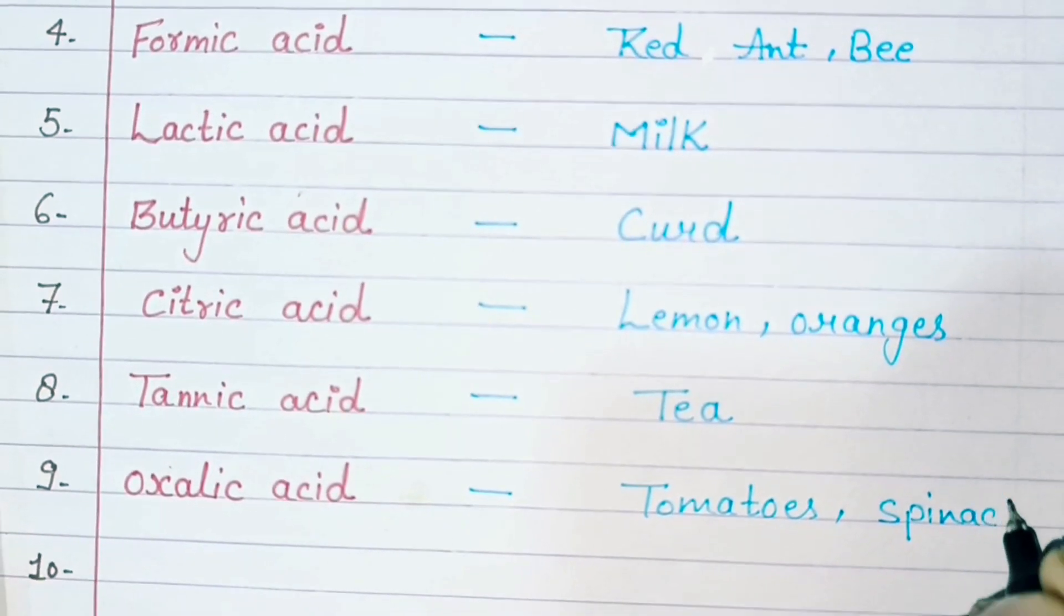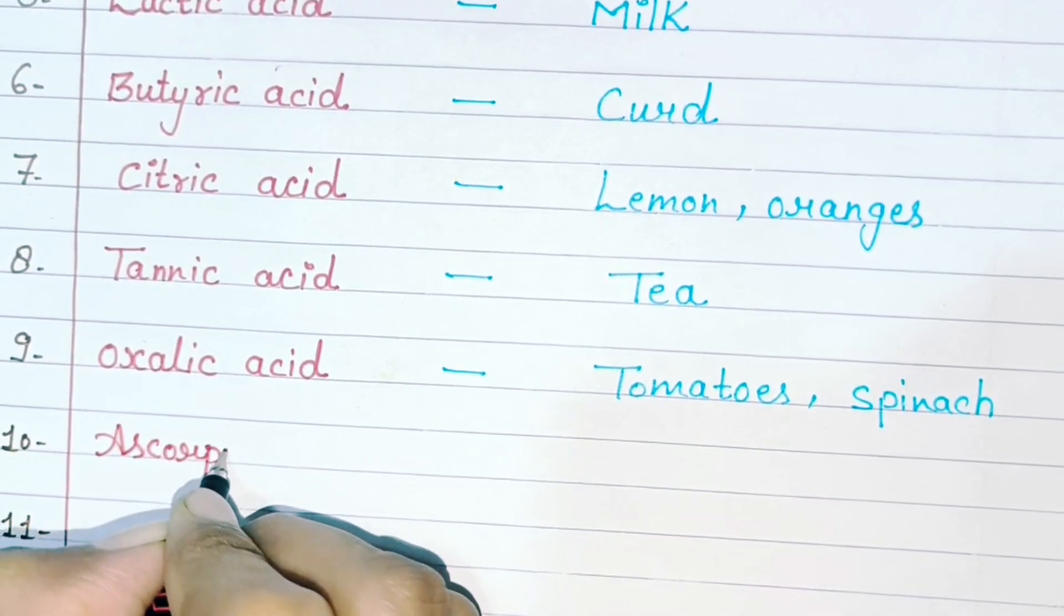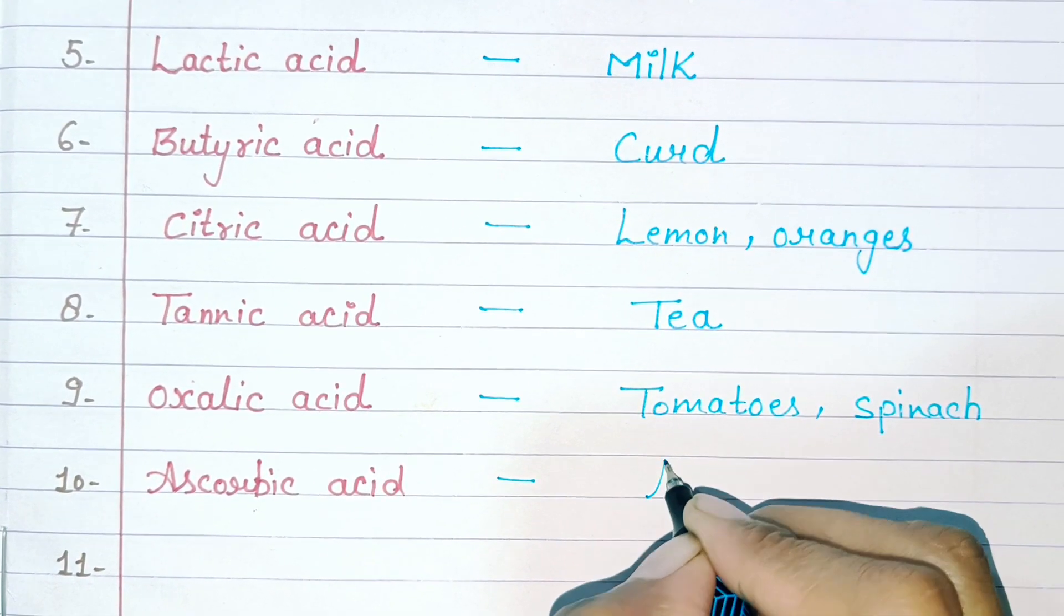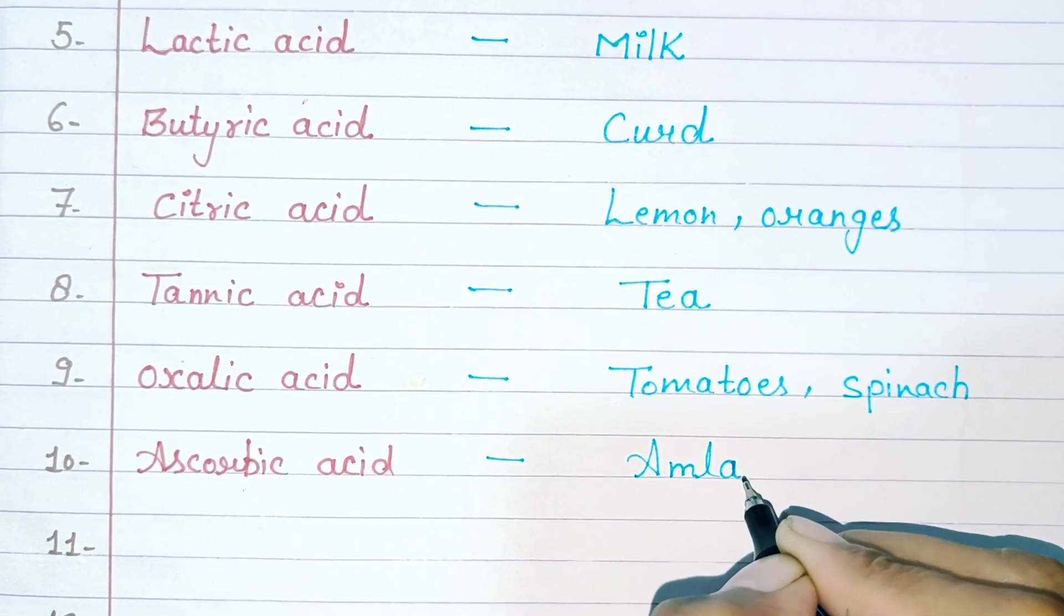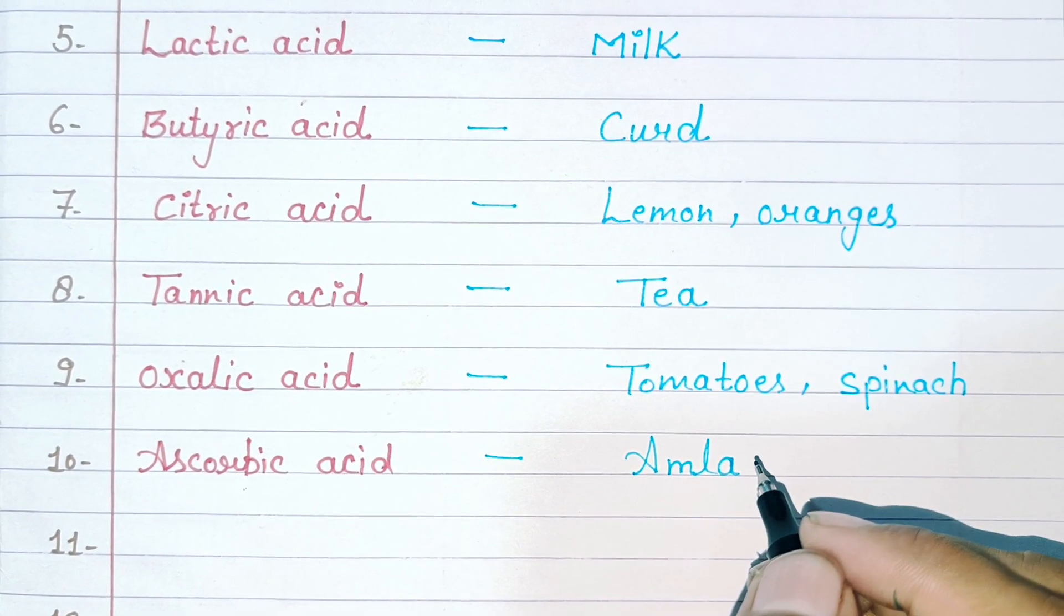Ascorbic acid. Amla. We all know amla is a very good source. Most people eat it.